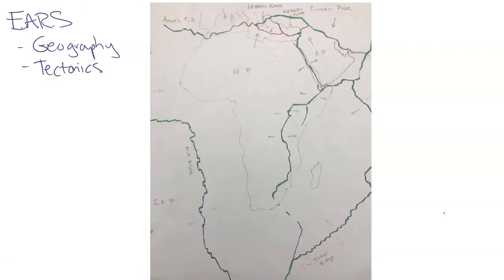Let's add more detail to this map and look at the tectonics — specifically the large-scale major and minor plates that are involved, based on area size and whether they're oceanic or continental.